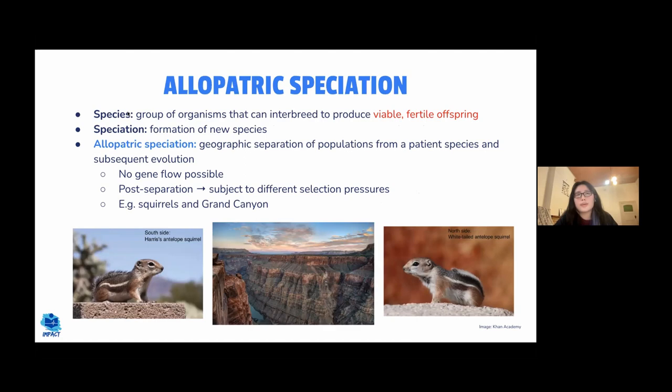Now we'll cover allopatric speciation. A species is a group of organisms that can interbreed to produce viable fertile offspring. Speciation is the formation of a new species. In allopatric speciation, a geographical separation occurs between a population and its parent species.